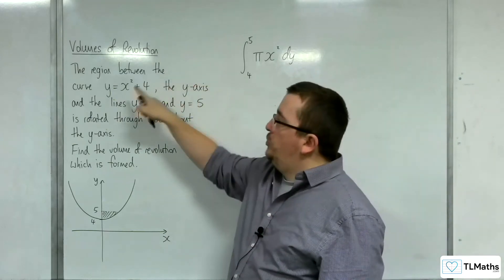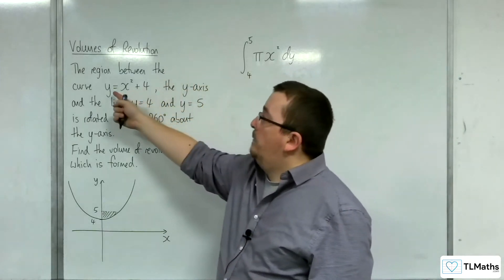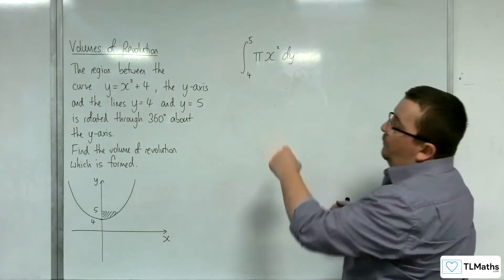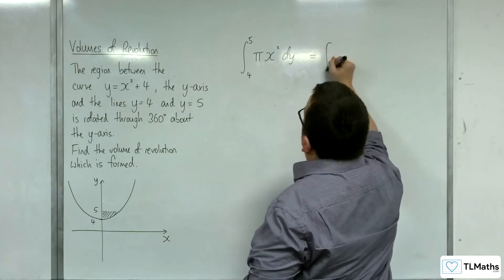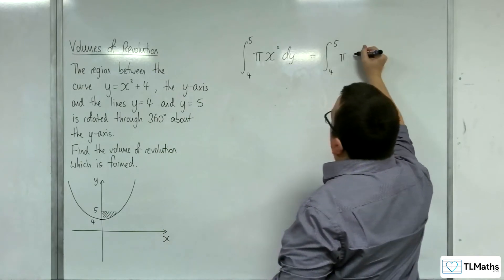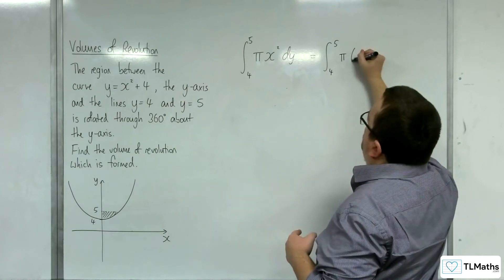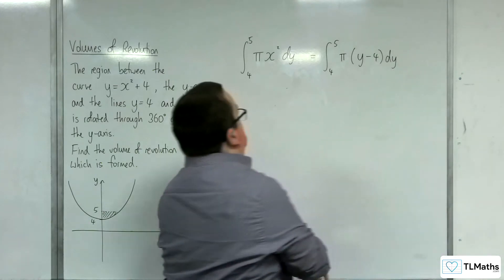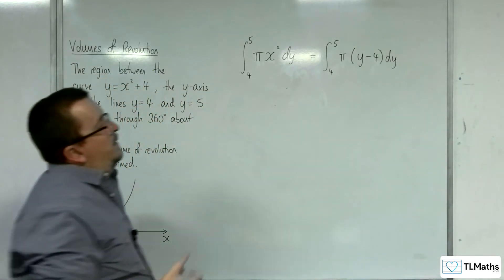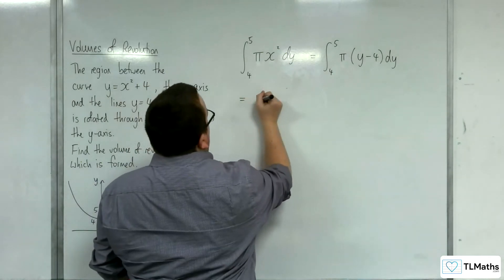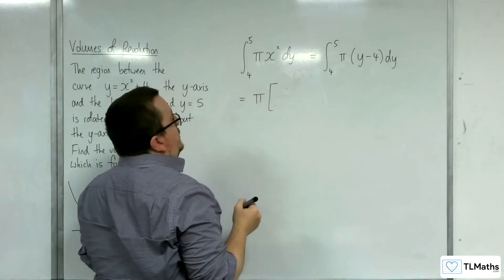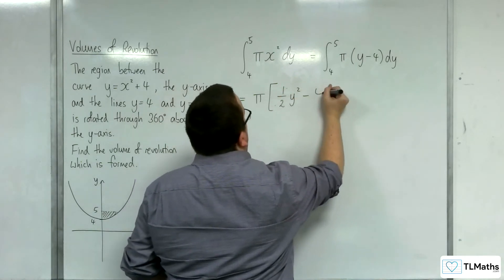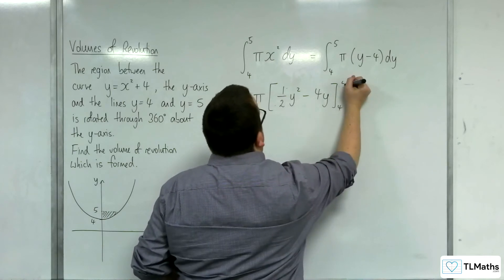So all we need to do is make sure we've got x squared, and we're going to substitute in y take away 4. Rearranging y equals x squared plus 4, x squared becomes y take away 4. Now we can bring the pi outside and evaluate the integral. So y integrates to one half y squared, minus 4 integrates to minus 4y, evaluated between 4 and 5.